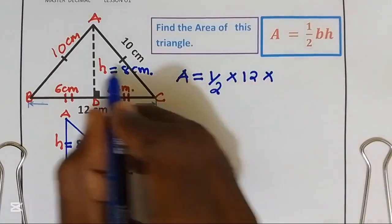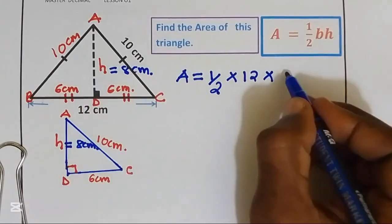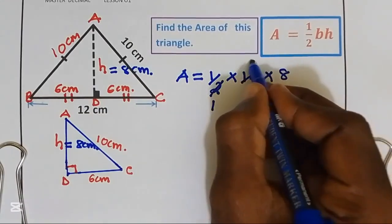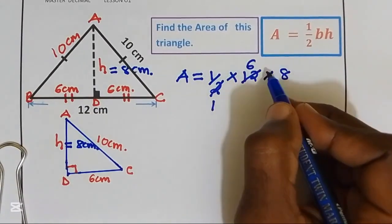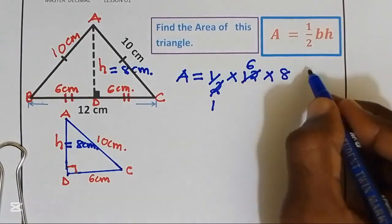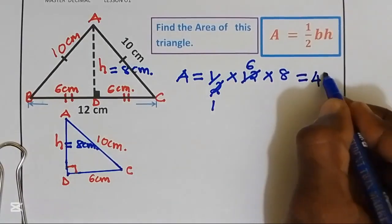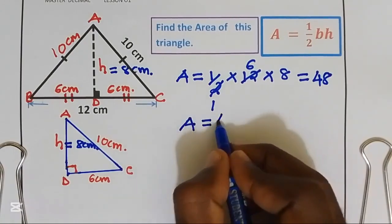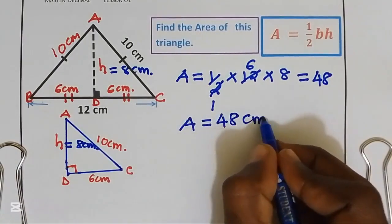12 divided by 2, we get 6. 6 times 8, we get 48. Our area is equal to 48 centimeters squared.